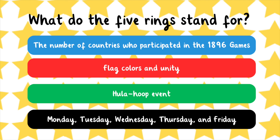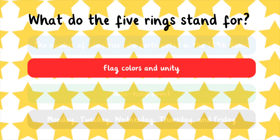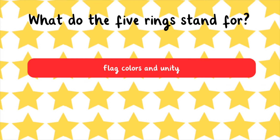What do the five rings stand for? The number of countries who participated in the 1896 games, Flag Colors in Unity, Hula Hoop Event, or Monday through Friday? Flag Colors in Unity. The color of the rings on the white background represents the colors found on all the flags of the nations that participated in the 1896 games. The overlap also represents unity and the coming together of athletes worldwide.